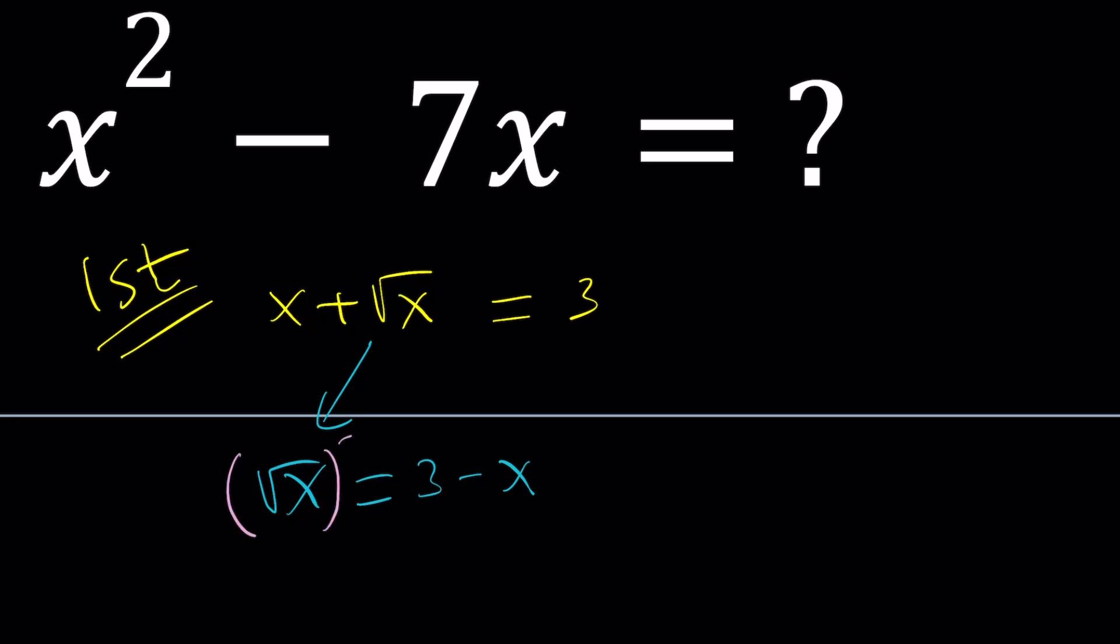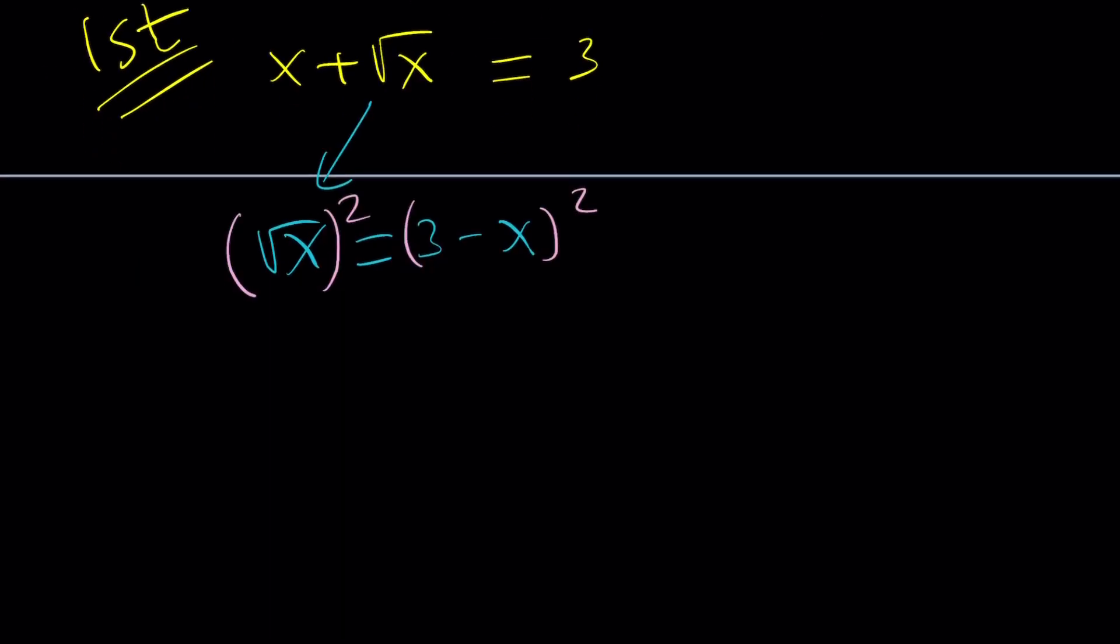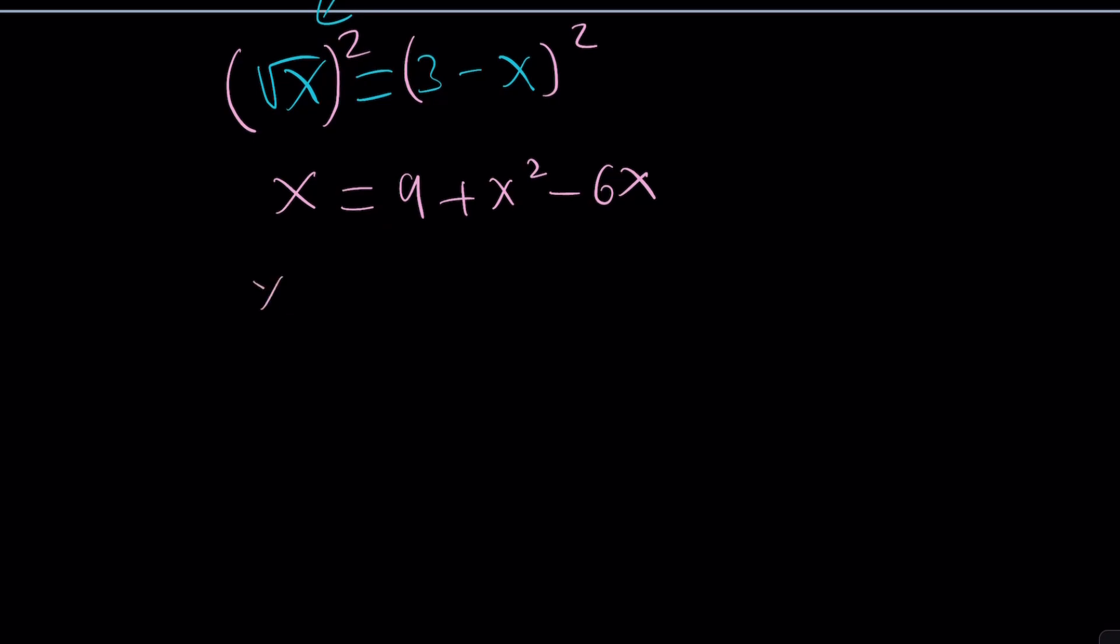If you square this, you get x equals 9 plus x² minus 6x. And if we put everything on the same side, you get x² minus 7x plus 9 equals 0. Now, this quadratic equation has two solutions, and they are both real, which is good.